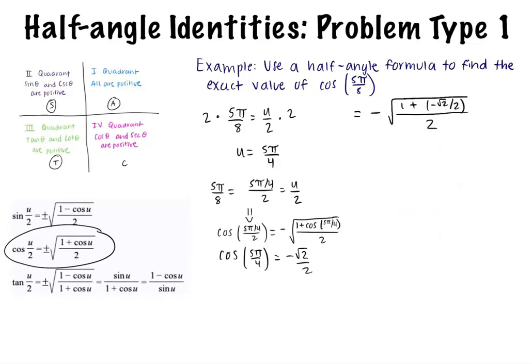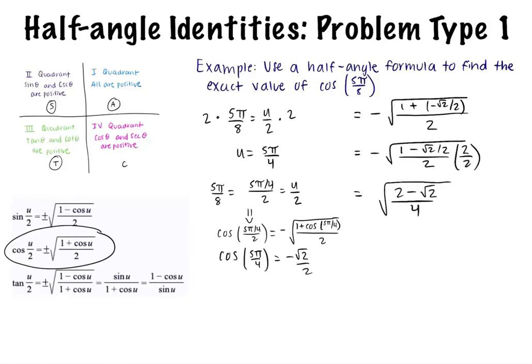Substituting negative square root of 2 over 2, we write negative square root of 1 plus negative square root of 2 over 2 all over 2, which simplifies to negative square root of 1 minus square root of 2 over 2 all over 2. We do this because when we look ahead, we know that we would prefer to have a 4 in the denominator since it is a perfect square. This simplifies to negative square root of 2 minus square root of 2 all over 4.